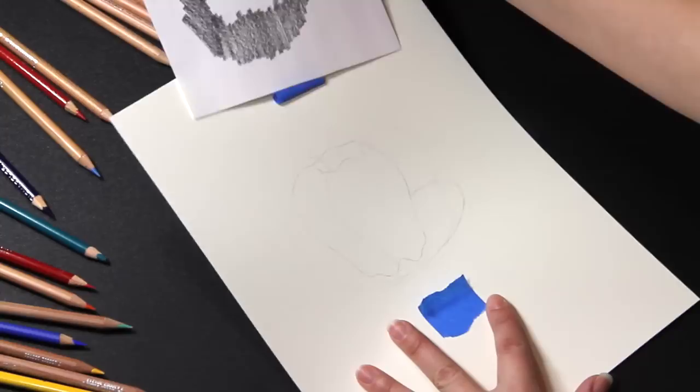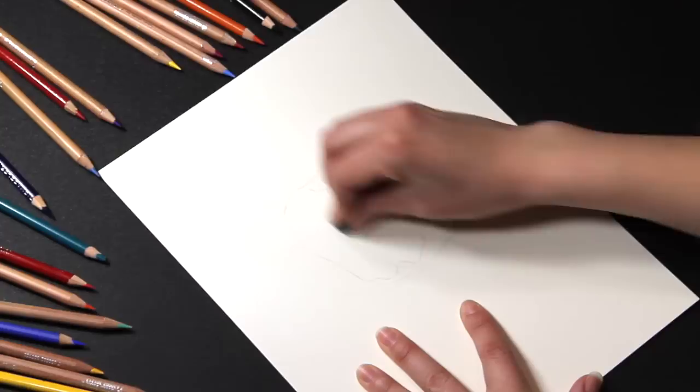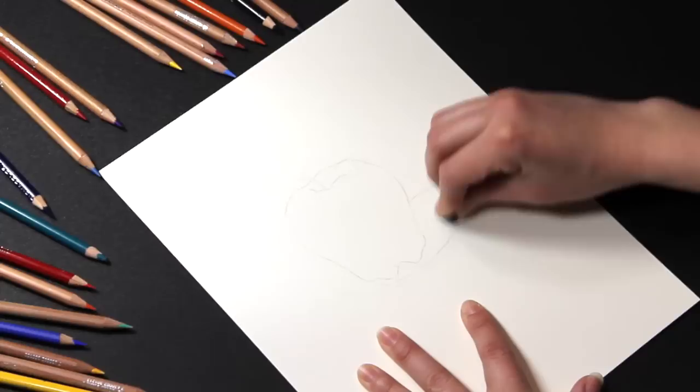When I remove the sketch paper, my image is transferred. I have a small amount of extra graphite that can be easily removed with an eraser, but my final paper doesn't have any graphite ground deeply into the tooth.